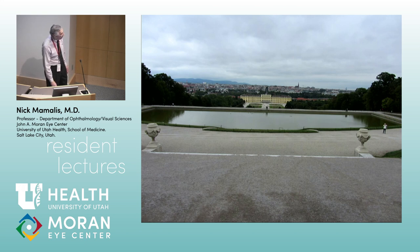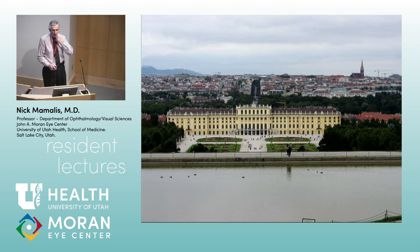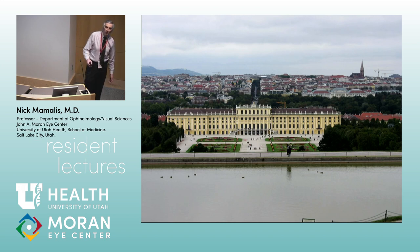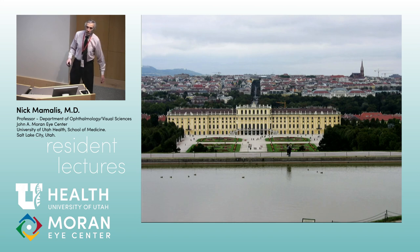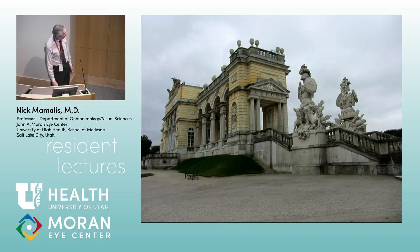You get a nice view of Vienna from up there. Here's Schönbrunn Palace — kind of a copy of Versailles. All palaces in Europe try to copy Versailles. Sam Mascott, a surgeon from Southern California who knows wine and museums, his response to Schönbrunn was: 'Well, once you've seen Versailles, it's good.' It was kind of a nice palace once you're there.